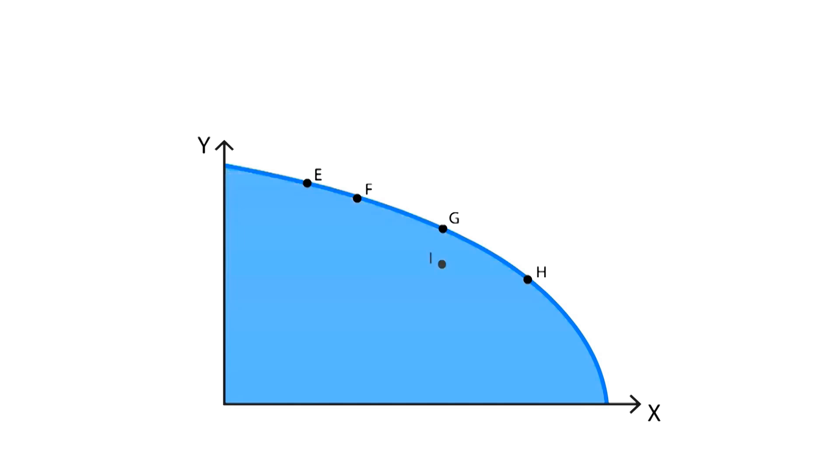Production at point I is technically inefficient because the firm could increase the production of good y while maintaining the production of good x, moving to the point G, which is on the production possibility frontier.